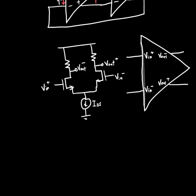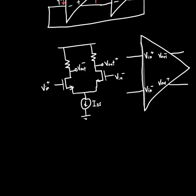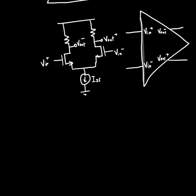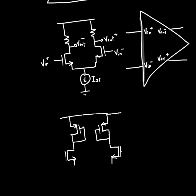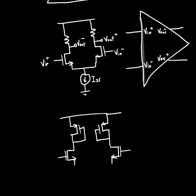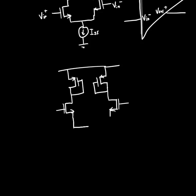Now, if we wanted to, we could actually replace those resistors up top with transistors, so we could replace them with, say, diode-connected PMOS transistors, like so. And then we'd have an all-transistor differential oscillator.